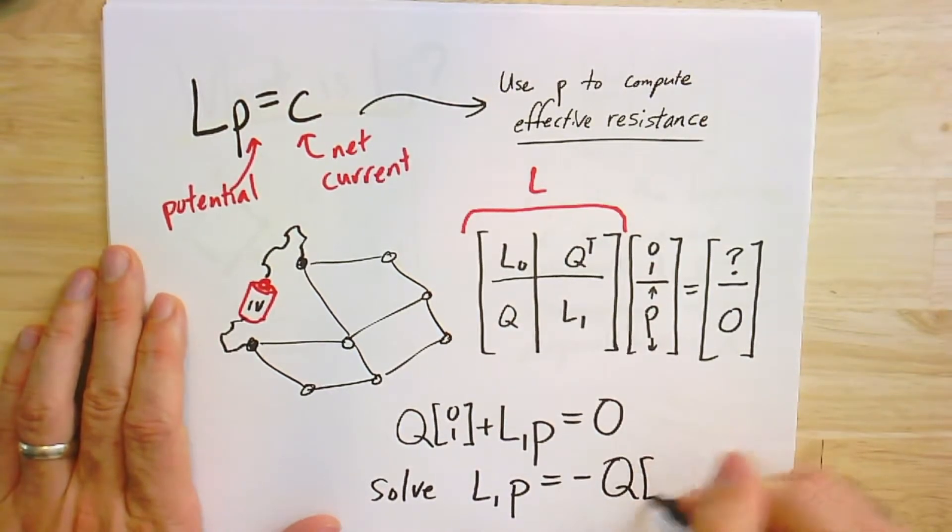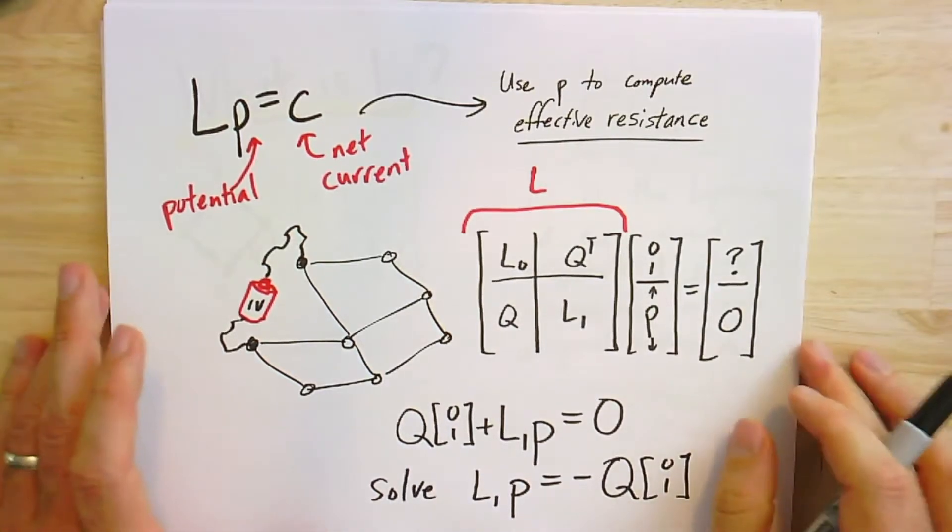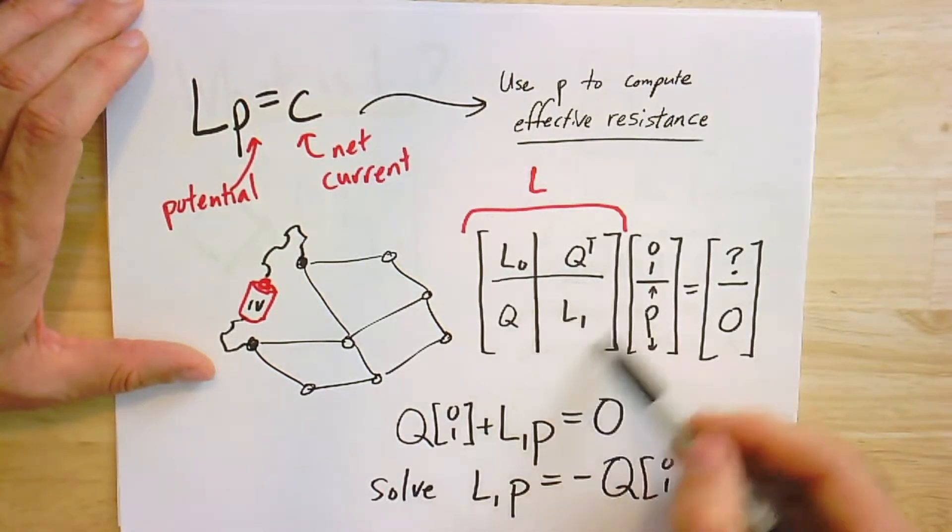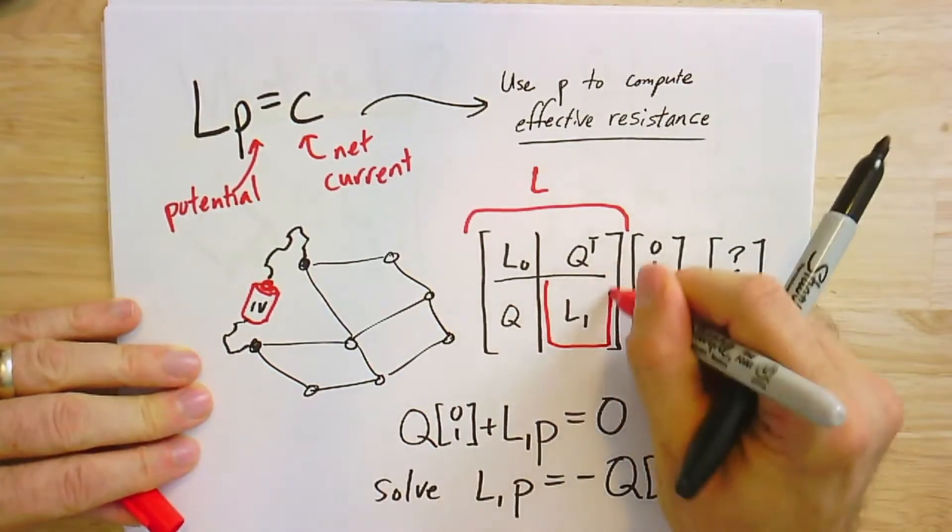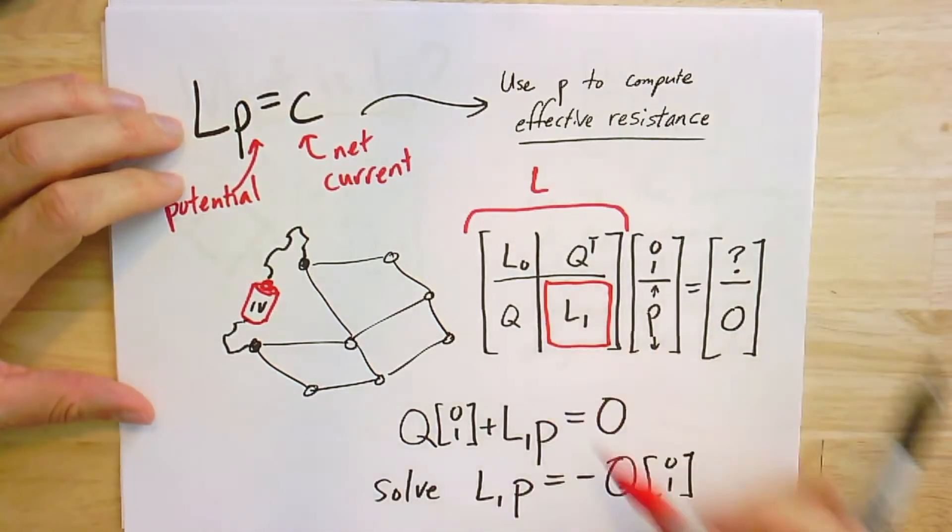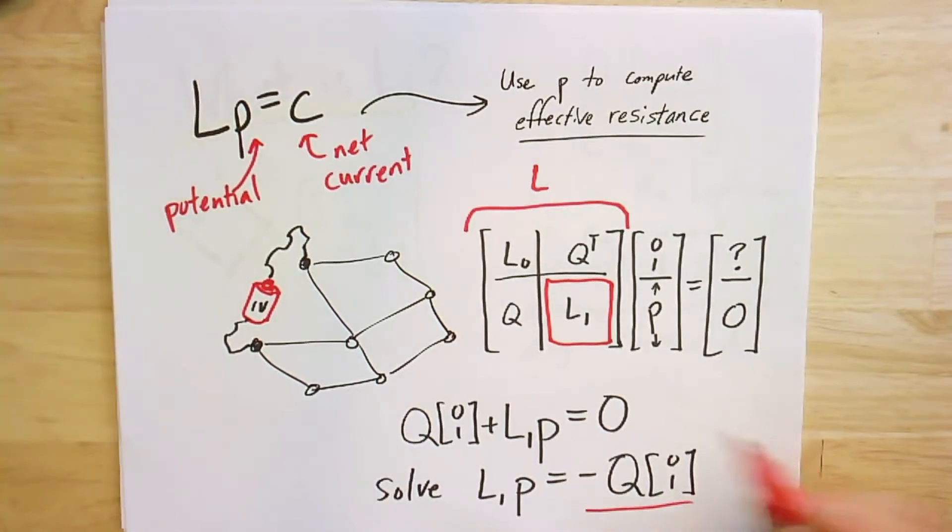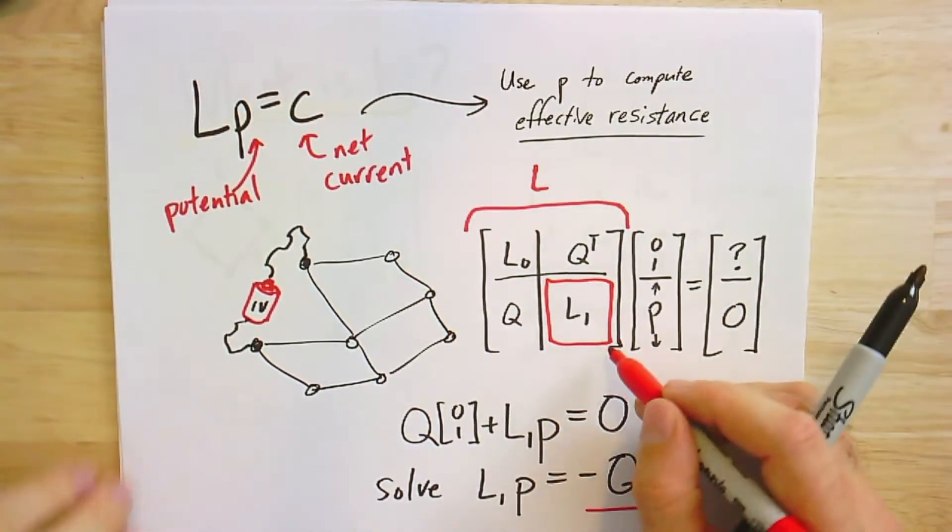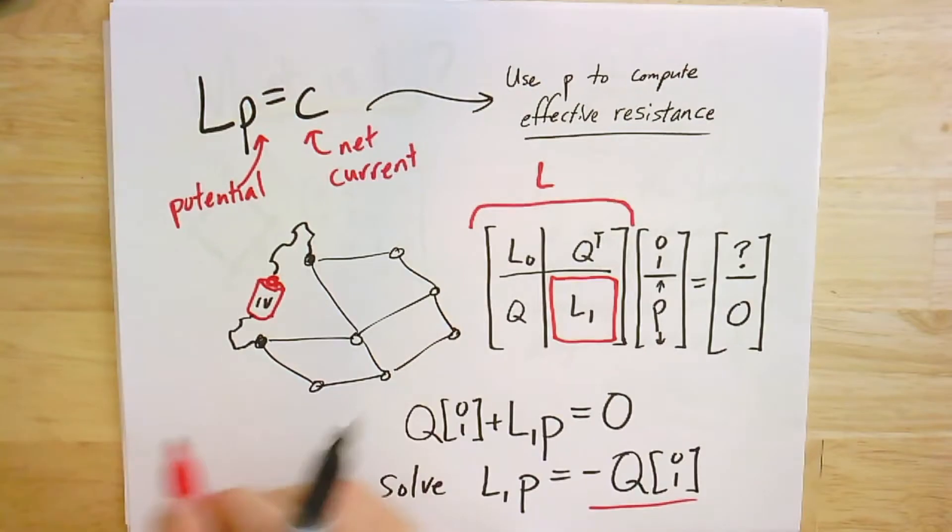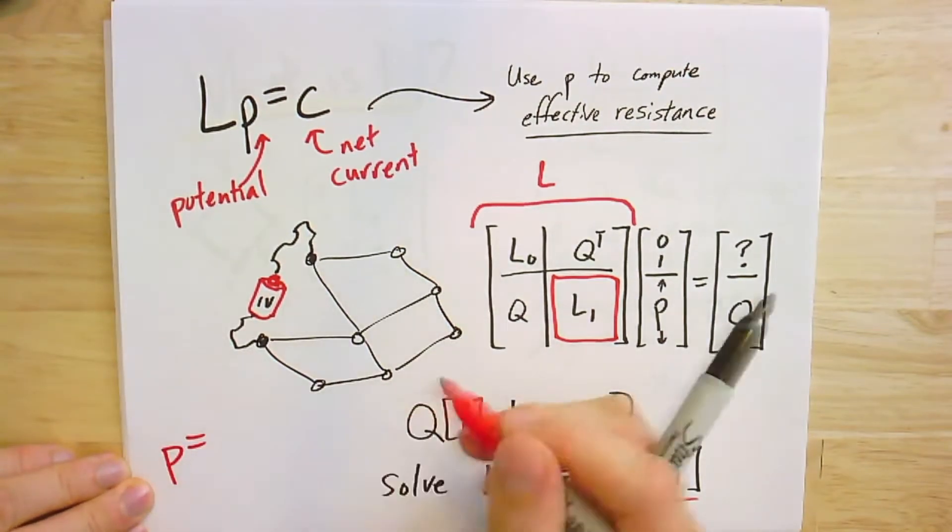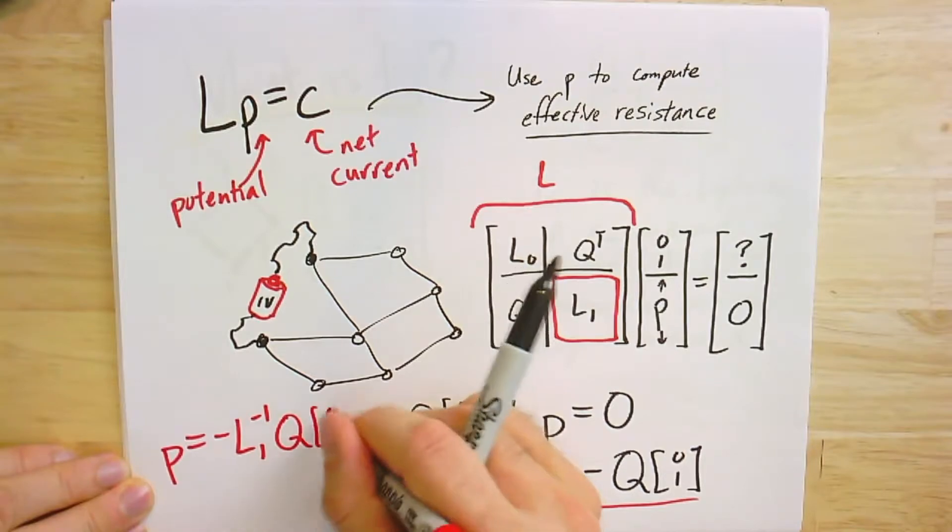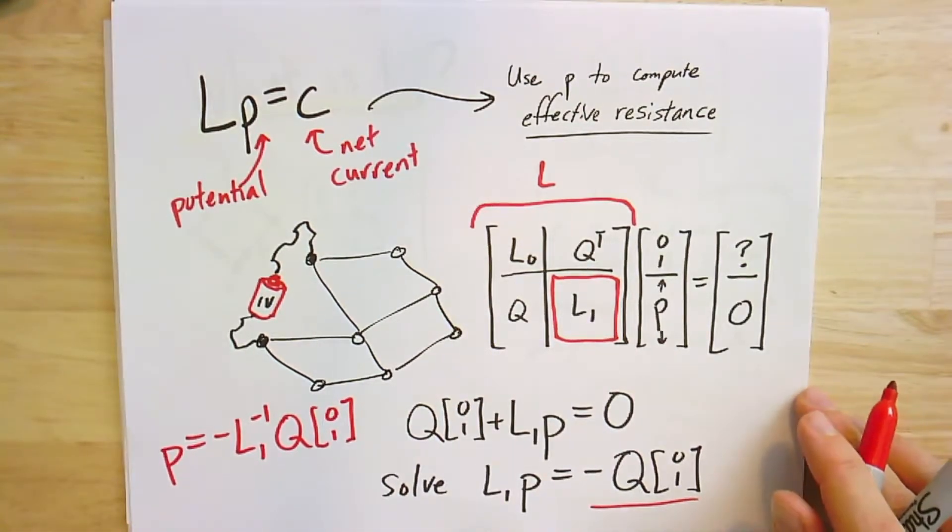So p, well, it's going to be we have Q times this [0,1] plus L1 p is equal to 0, and so we can wrangle this into a single linear system as follows: solve L1 p equals negative Q times [0,1]. And this is now the system we're solving. It's like the equations are just defined by this sub-matrix of the Laplacian.